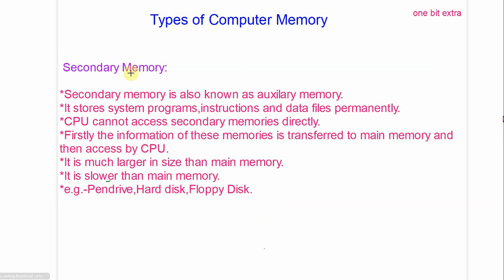Next is secondary memory. Secondary memory is also known as auxiliary memory. It stores system programs, instructions, and data files permanently. The CPU cannot access secondary memory directly.